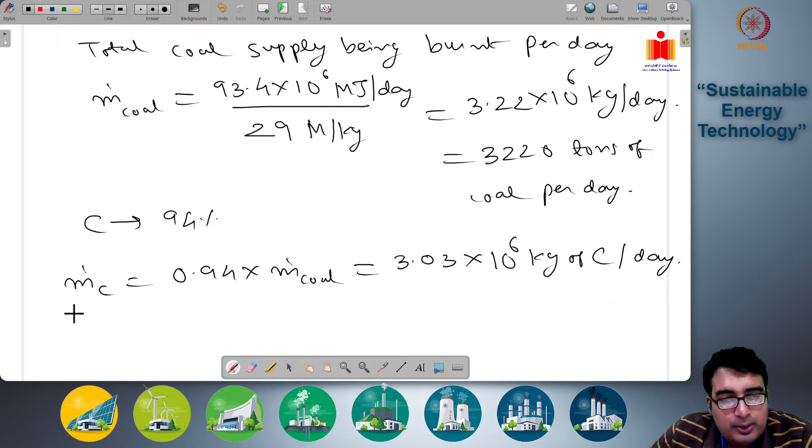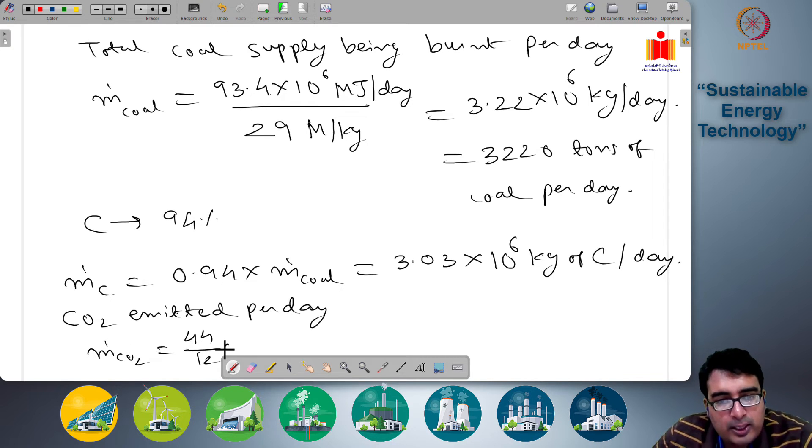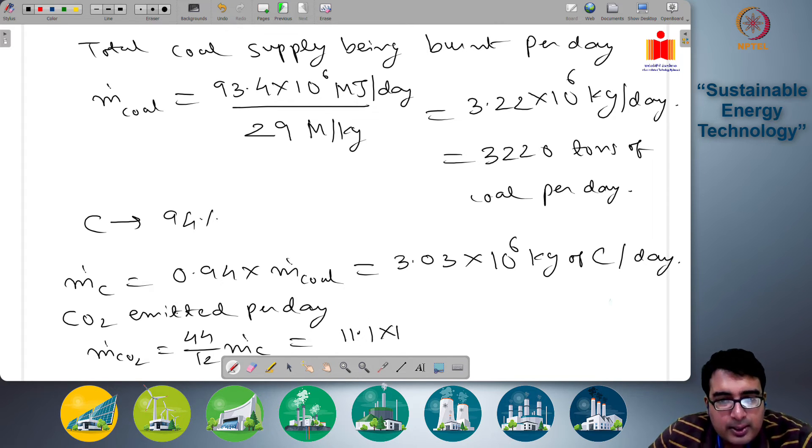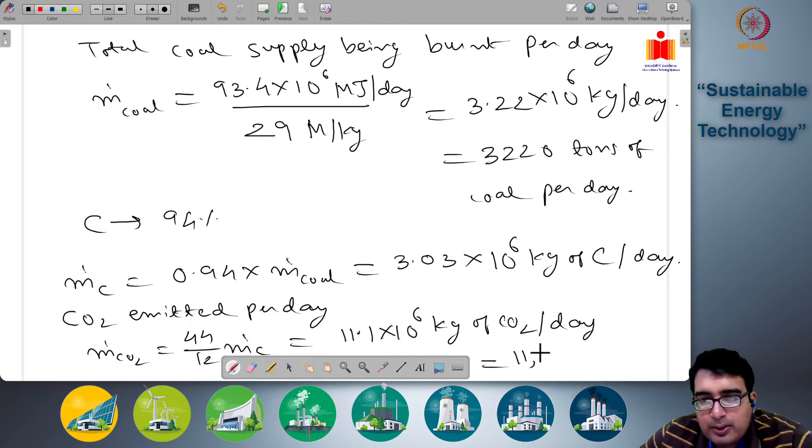So now CO2 emitted per day then becomes m dot CO2 equals to 44 by 12 m dot C, equals to 11.1 × 10^6 kg of CO2 per day. So again if I write this in tons, 11,100 tons of CO2 per day.